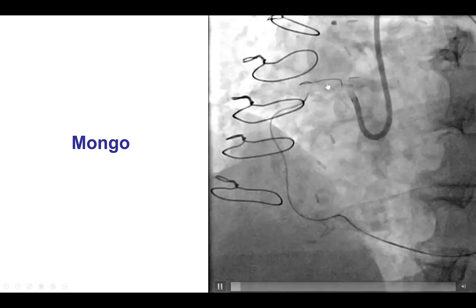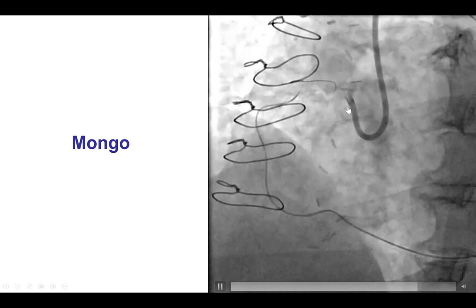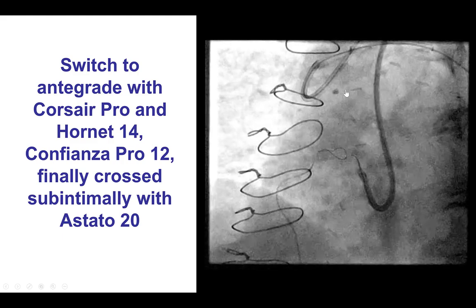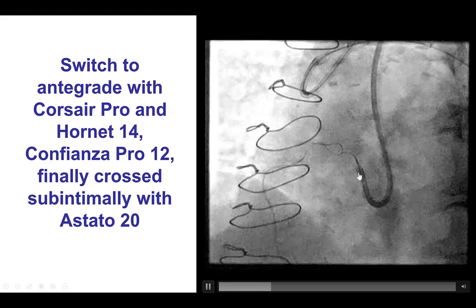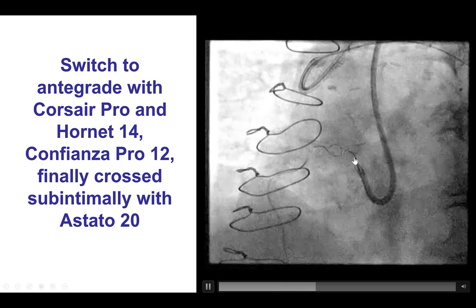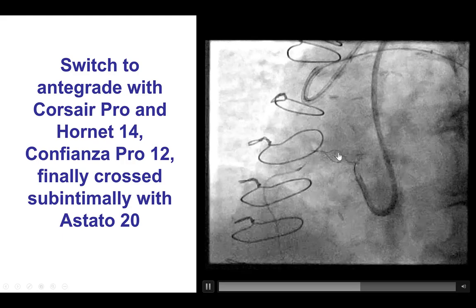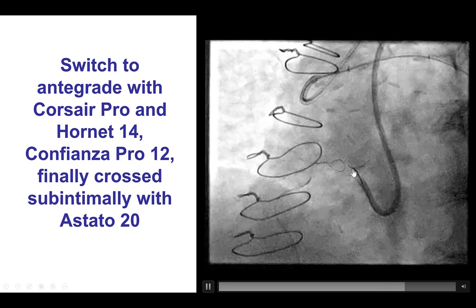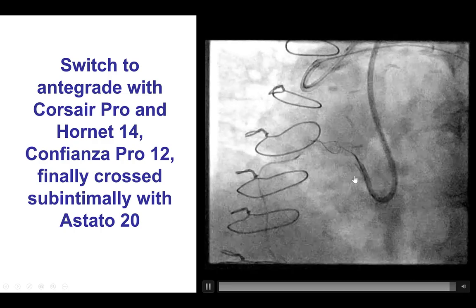Now that we had a retrograde demarcation of the location of the right coronary artery, we did some additional antegrade injections using an AL-1 guide, and we could now see some possible entry into the RCA. We used various guidewires and eventually using an Astato 20, we were able to advance it subintimally inside the structure of the proximal right coronary artery. It was heavily calcified, but the guidewire eventually made good progress using the retrograde guidewire as a marker.